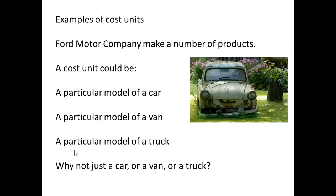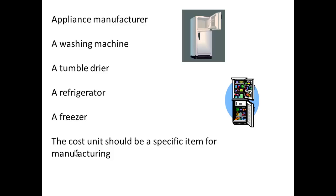If Ford Motor Company wants to deal in cost units, its cost unit might be a particular model of a car, van, or truck — but not just cars or vans or trucks in general; you'd have to be more specific. Similarly, an appliance manufacturer could relate costs to a particular washing machine, tumble dryer, refrigerator, or freezer. In other words, our cost unit has to be a specific item for manufacturing.